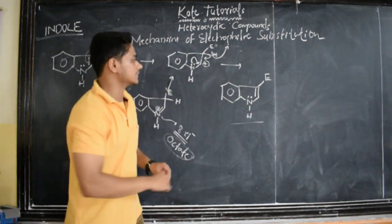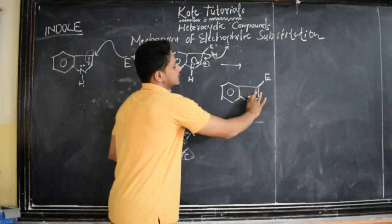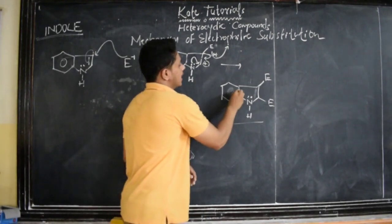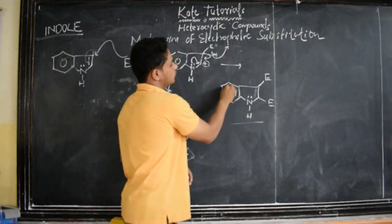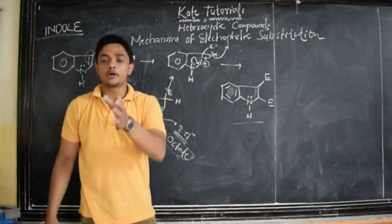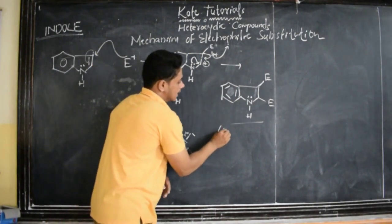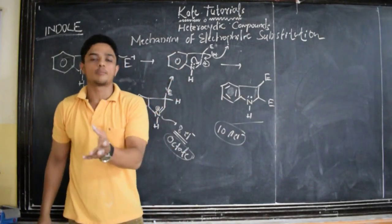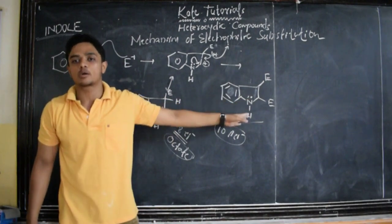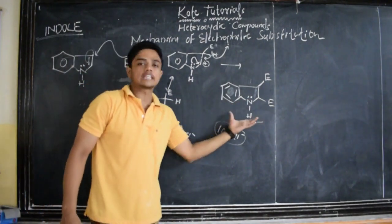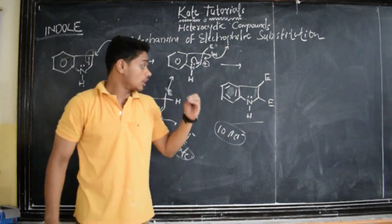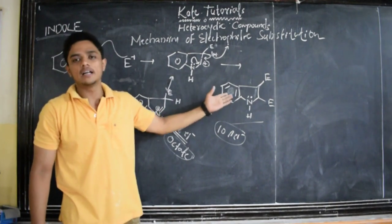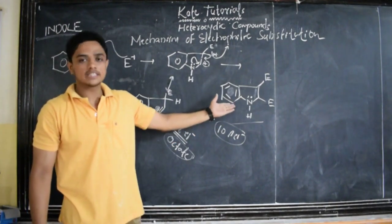We do not see any addition reaction. If it undergoes addition reaction, you count the pi electrons: two, four, six, eight pi electrons. But to get aromaticity, we need ten pi electrons. If you get ten pi electrons, then only it is aromatic. Since here it is eight pi electrons, it is anti-aromatic, which is highly unstable. So, such compounds are not isolated — we cannot see them anywhere. These are unstable because they are anti-aromatic.